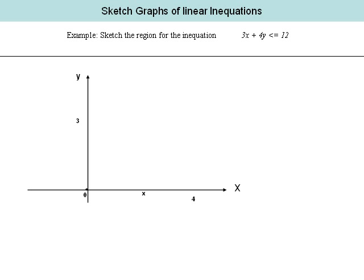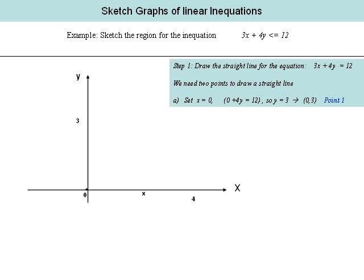On this slide, we will be looking at sketching a graph of a linear inequation. In our example, we have been asked to sketch the region identified by the inequation 3x plus 4y is less than or equal to 12. In order to sketch or identify the region, we first need to identify the boundary. We do this by replacing the less than or equal to sign with an equal sign — this identifies the boundary. So we are going to draw a straight line for 3x plus 4y is equal to 12. For a straight line, we merely need two points, then connect them.